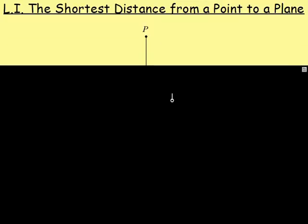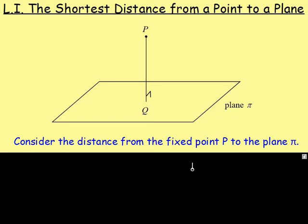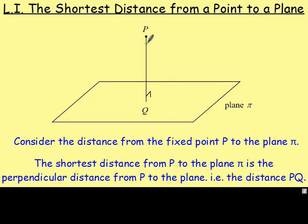Let's start off with a point and a plane. Looking at this diagram here, we want to consider the distance going from a fixed point, let's call it P, to a plane, let's call it plane pi. The shortest distance going from P down to the plane will not be coming off at an angle. The shortest distance is going to be the perpendicular distance, as you can see here with this black line — from P down to Q, that point of intersection.